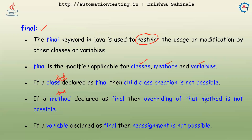If a variable is final, reassignment is not possible — you cannot change the value of that variable. So, at the class level you cannot extend it, at the method level you cannot override it, and at the variable level you cannot change its value. This is all about the final keyword.